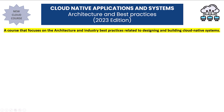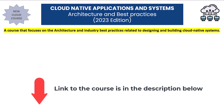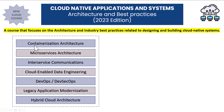This course covers architectural best practices related to designing and implementing cloud-native applications and systems. The sections of this course include the following: containerization architecture and best practices, microservices architecture and best practices, inter-service communications, cloud-enabled data engineering, DevOps and DevSecOps, legacy application modernization best practices, and hybrid cloud architecture and best practices.